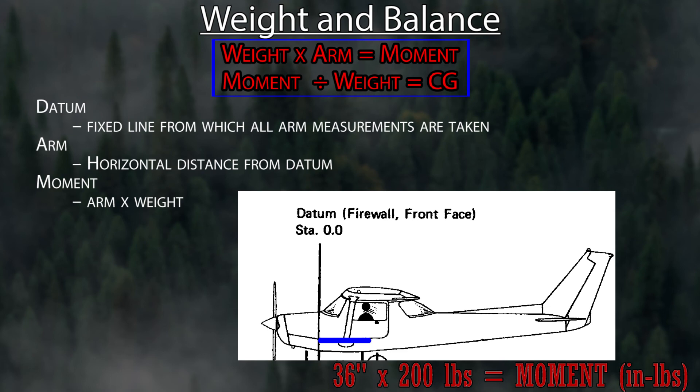Everything in the airplane has a moment. So to find out your weight and balance, you take all these moments, divide them by your weight, and that gives you the center of gravity for the entire airplane.